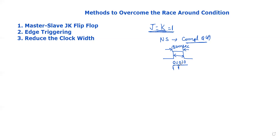Because the output is not consistent, we need to overcome this using three methods. The three methods are: the Master-Slave JK flip-flop, edge triggering, and reducing the clock pulse width.